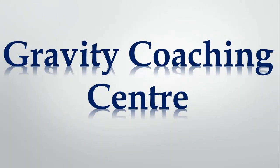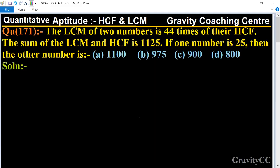Welcome to our channel, Gravity Coaching Center. Quantitative Aptitude, Chapter HCF and LCM, Question Number 171. The LCM of two numbers is 44 times their HCF. The sum of the LCM and HCF is 1125. If one number is 25, then the other number is what?